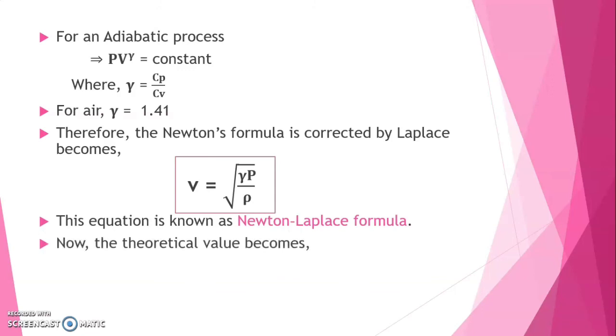Now, the theoretical value becomes V equals root over gamma into P divided by rho. Substituting the value of gamma P and rho, we get root over 1.41 into 1.0139 into 10 power 5 divided by 1.293. Simplifying this, we get velocity equals 332 meter per second, which is equal to the experimental value.